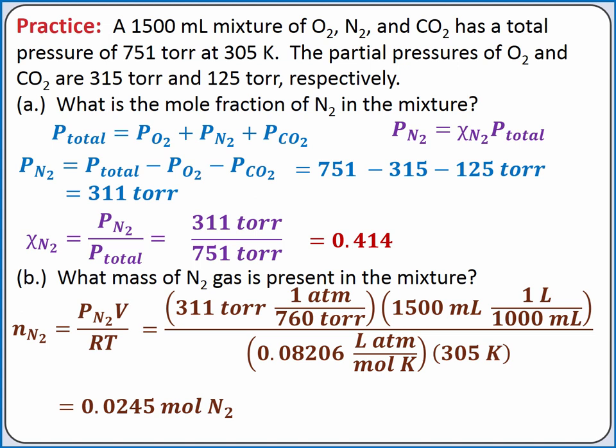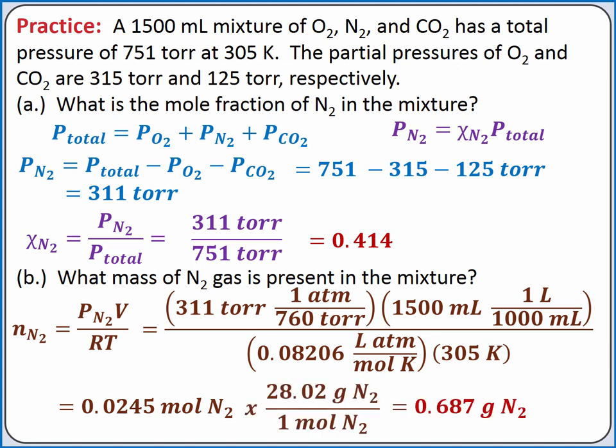Our last step is to convert from moles to grams using the molar mass of nitrogen. Completing the calculation, we should get 0.687 grams of nitrogen gas in the mixture.